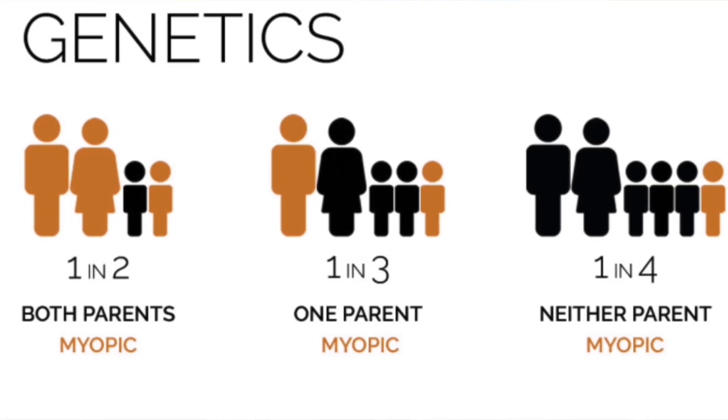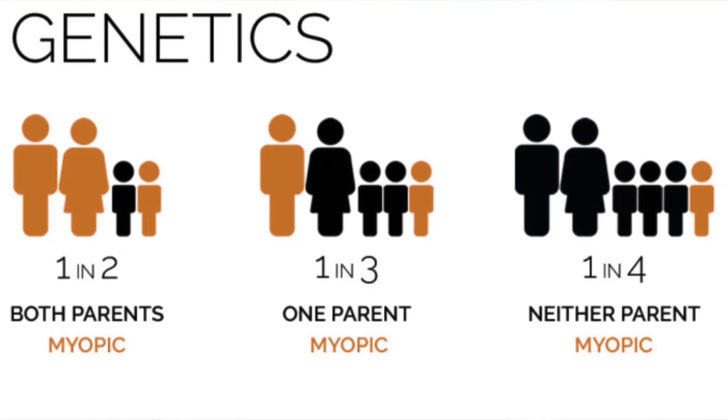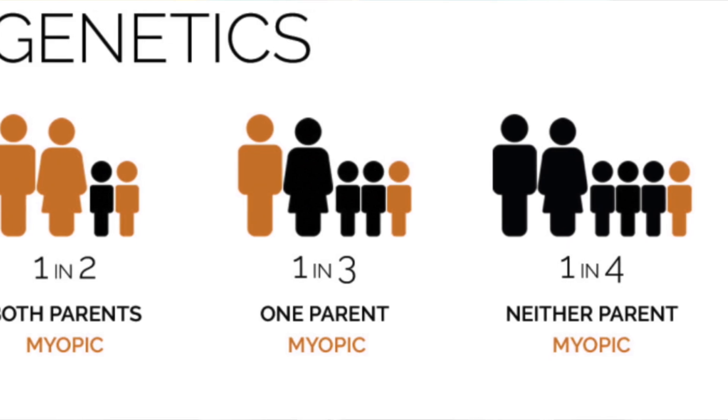We know a big factor in your child becoming myopic is genetic. If one or both parents are myopic, there's a higher likelihood the child might become myopic, but that's not guaranteed. Environment also plays a big factor — looking up close for long periods of time can increase the risk for developing nearsightedness, and spending more time outdoors can reduce the likelihood of your child becoming nearsighted.